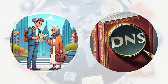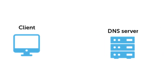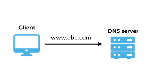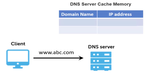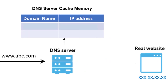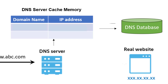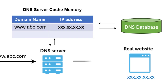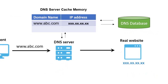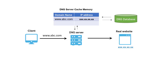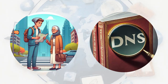Think of DNS as a giant phone book for the internet. For example, when a user wants to visit www.abc.com, the request goes from the client machine to the DNS server. The DNS server searches its cache memory first; if not found, it goes to the DNS database where the domain name is registered against its respective IP address. The fetched IP address is stored in cache memory and forwarded to the client machine.